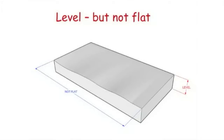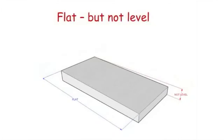Where it's marked 'not flat,' you may, if you're fortunate enough, see some waves. That's known as the short wave characteristic of a floor. This floor is flat — in other words, it's a constant slope — but it's not level because, as you can see from the caption, it is sloping down.